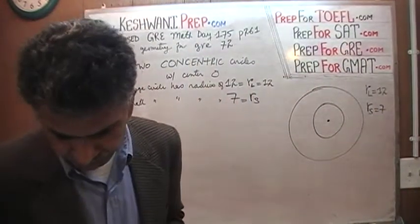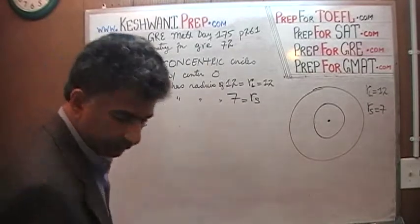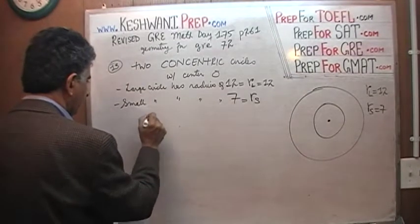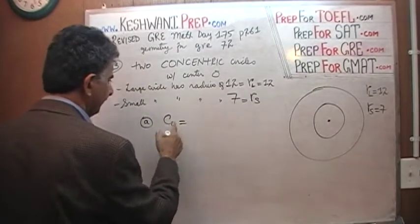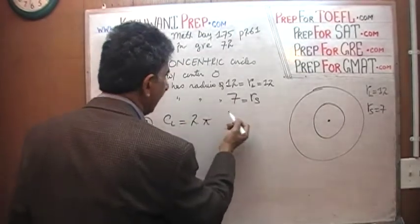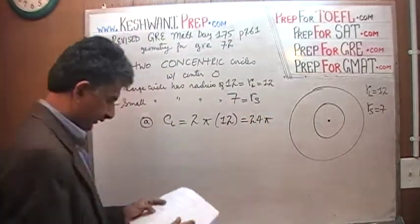What's the first thing they ask you? Circumference of the large circle which is very straightforward. Circumference of the large circle. Again, C with a subscript L for the large circle is simply 2πR which is 12. 24π. Very simple, very straightforward.